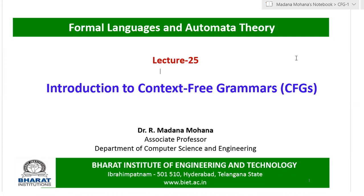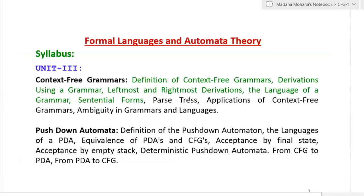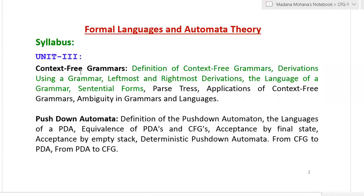These three topics related to type 2 will be discussed in units 3 and 4. In this lecture, we will discuss introduction to context-free grammars, definition of context-free grammars, derivations using grammar, types of derivations — that is leftmost and rightmost derivation — and language of a grammar. In the next lecture, we will continue with parse trees, applications of context-free grammars, and ambiguity in grammars and languages. Later, we will discuss pushdown automata.